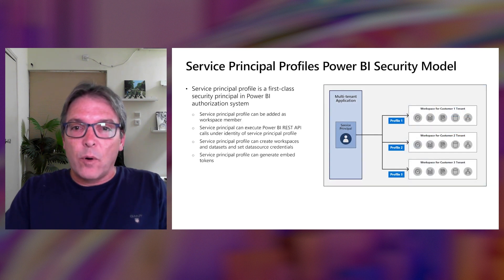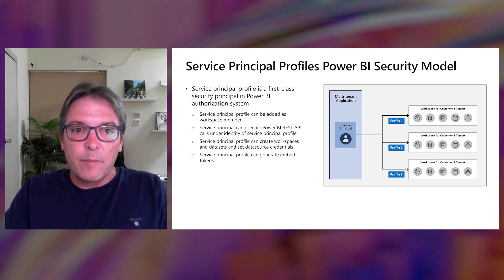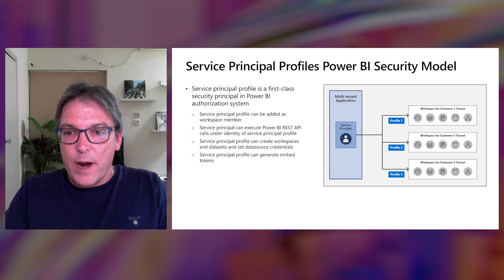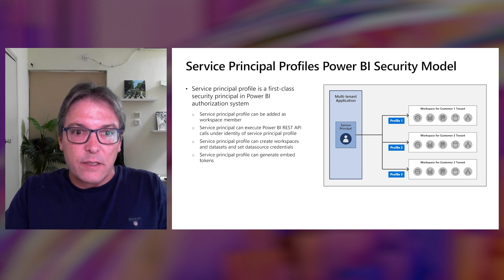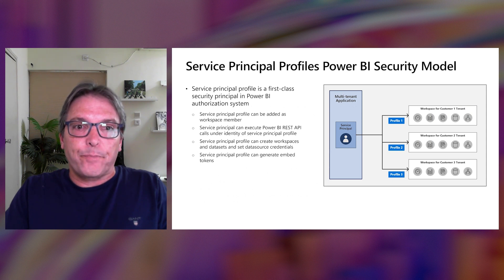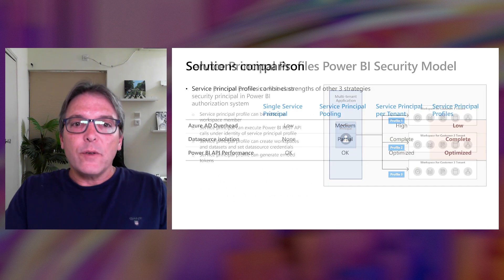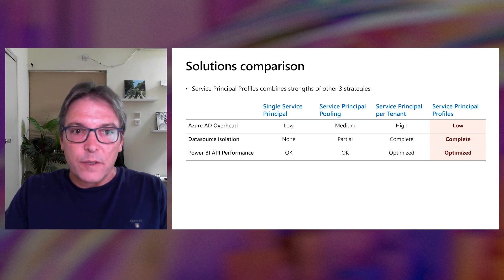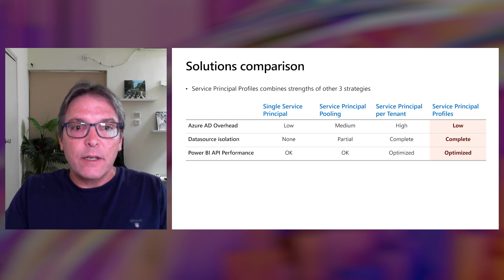Looking from a security model point of view, a service principal profile is a first-class security principal in the Power BI authorization system. It can be added as a workspace member, execute Power BI REST API calls to create workspaces and datasets, set data source credentials, and generate embed tokens. As you can see in the solutions comparison table, it combines the best of all other options: low Azure AD overhead, complete data source isolation, and optimized Power BI API performance.